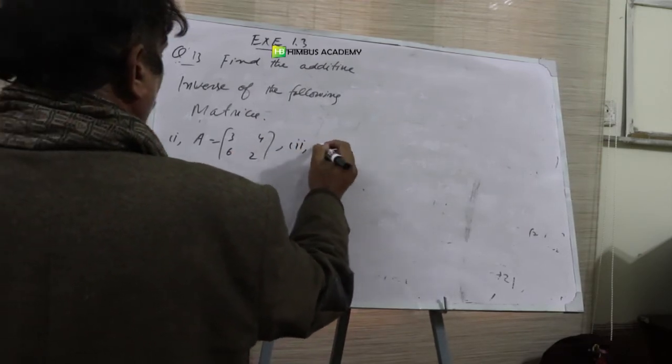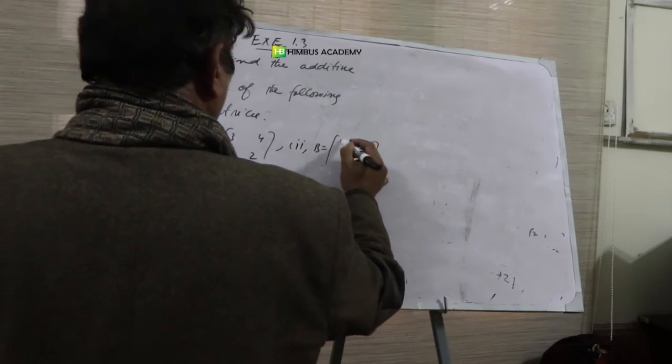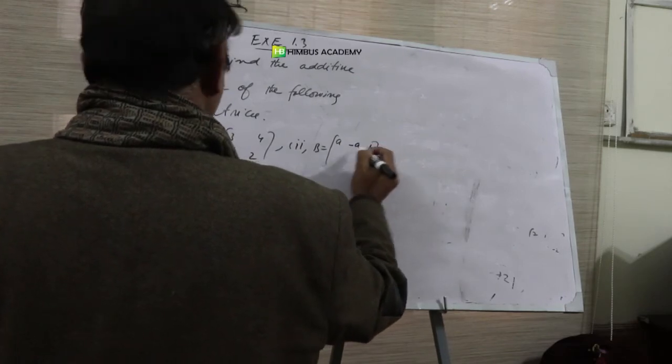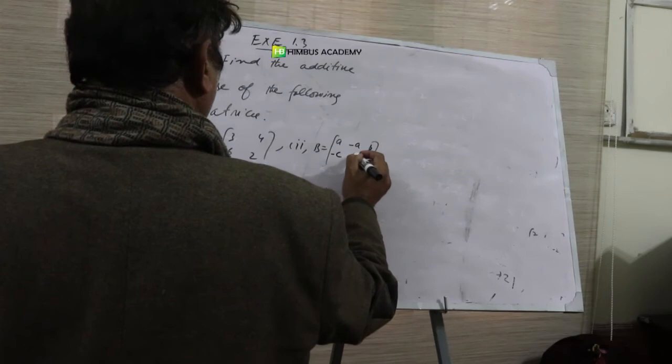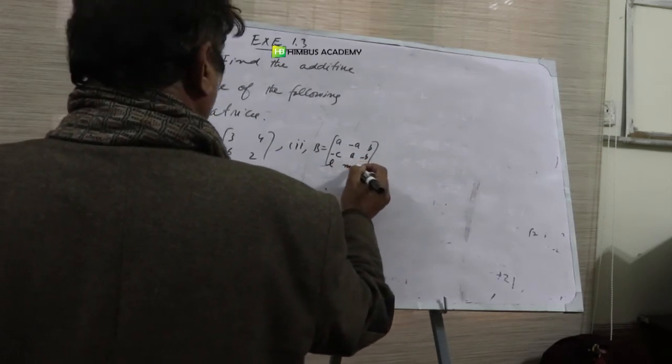Number 2. B is equal to A minus A, B minus C, A minus B, L, M, N.